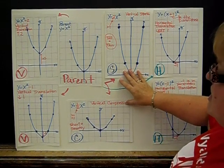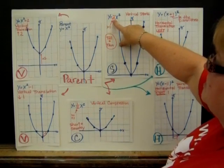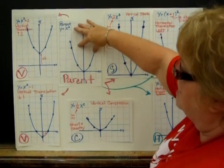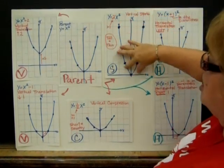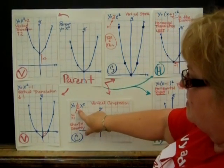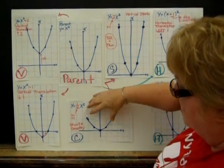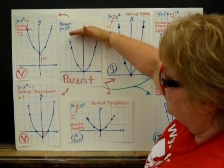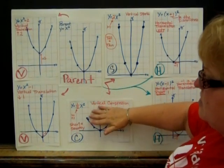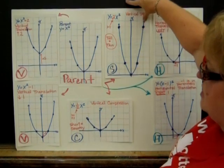And then these are our stretches and compressions. We took our parent function and multiplied it times 2, which gives us a stretch. It took our graph and stretched it out and made it tall and thin. On this one, we took our parent and multiplied it by the fraction 1/2. And now we took our graph and pressed down on it and made it short and squatty. So compression is like applying pressure. Stretch is just what you think—you stretched it out.